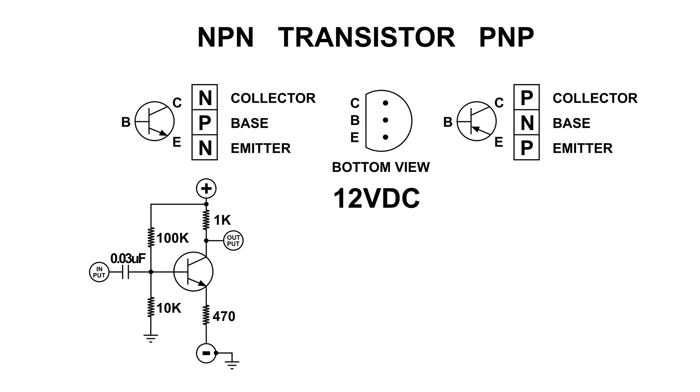The 0.03 microfarad capacitor allows the audio signal to pass through but it blocks any DC, and we're going to be taking a look at the input signal to this audio amplifier and the output at the same time.